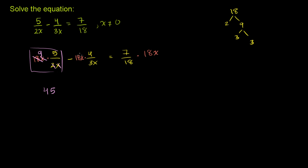And then this term right here, x divided by x is 1. 18 divided by 3 is 6. So you have 6 times 4 is 24, but you have a subtraction sign here, so minus 24 is equal to,